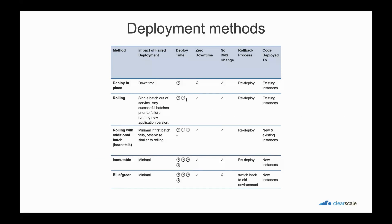Part of continuous delivery is the deployment methods. There are several methods to deploy, whether in production or a development environment. You can consider multiple deployment strategies for rolling out new versions of software in a continuous delivery process. These include deploy all at once, rolling deployment, immutable, and blue-green. We indicate which of these methods are supported by AWS CodeDeploy and AWS Elastic Beanstalk. The following table summarizes the characteristics of each deployment method.